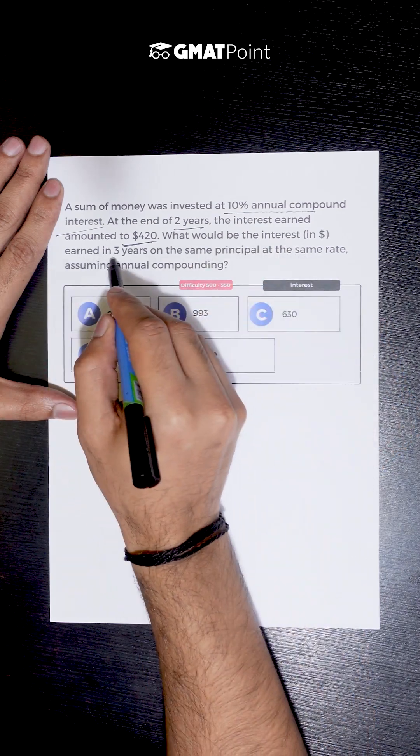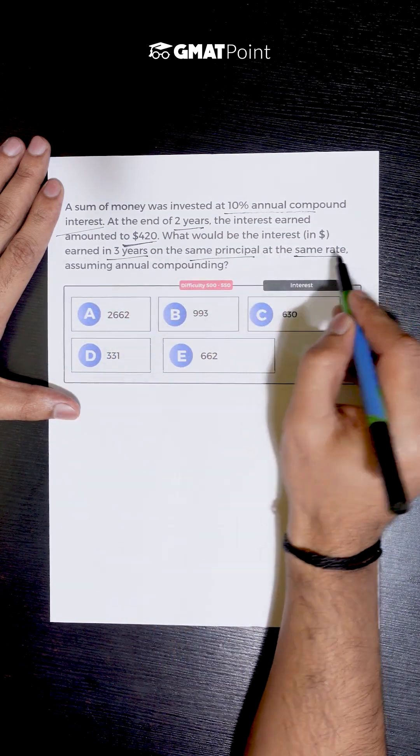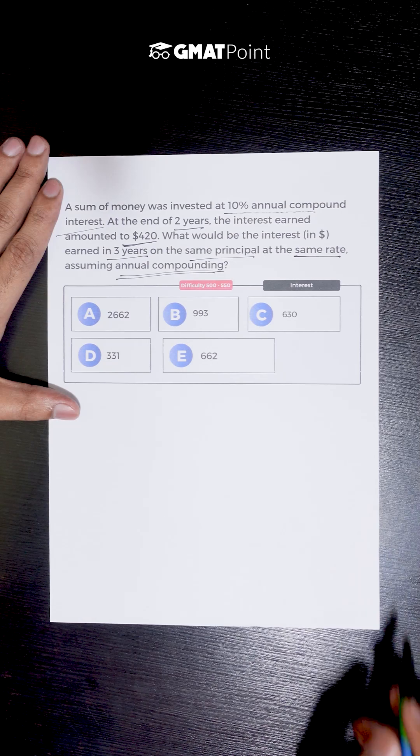What would be the interest earned in three years on the same principal at the same rate, assuming annual compounding?